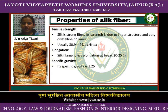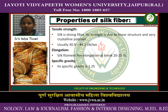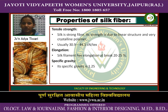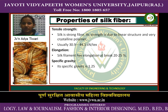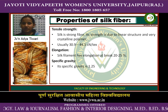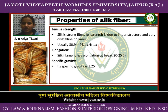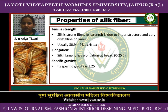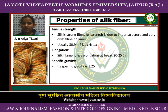Now the properties of silk fiber. Tensile strength: silk is a strong fiber. Its strength is due to its linear structure and very crystalline polymer, usually 30.9 to 44.1 cN per tex. Elongation: silk filament has elongation at break of 20 to 25 percent. Specific gravity: its specific gravity is 1.25.